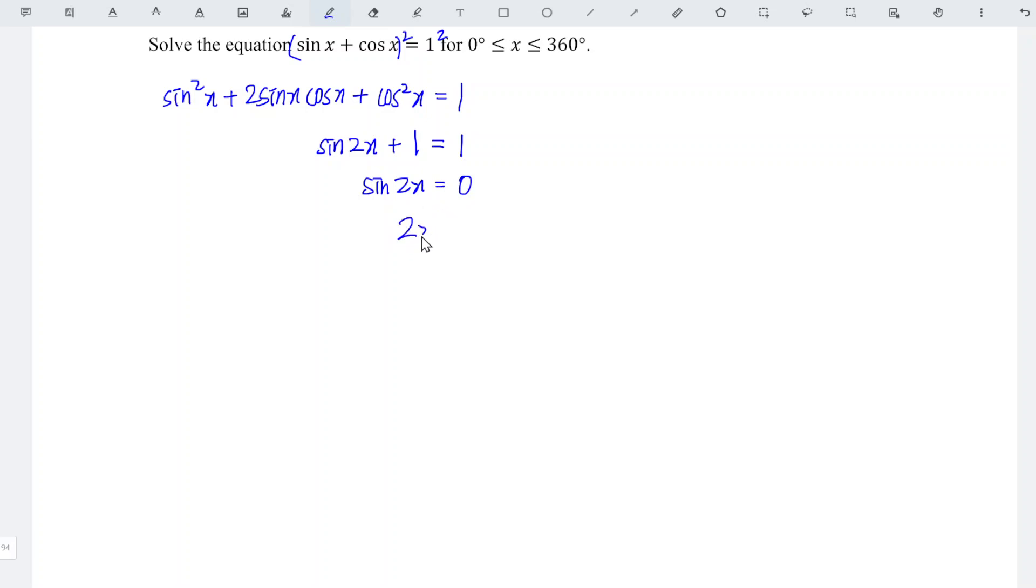Take the inverse: 2x = arcsin(0). For the sin function, we have 0°, 180°, and 360°. But this is for x, and now we have 2x, which means we have 2 rounds.